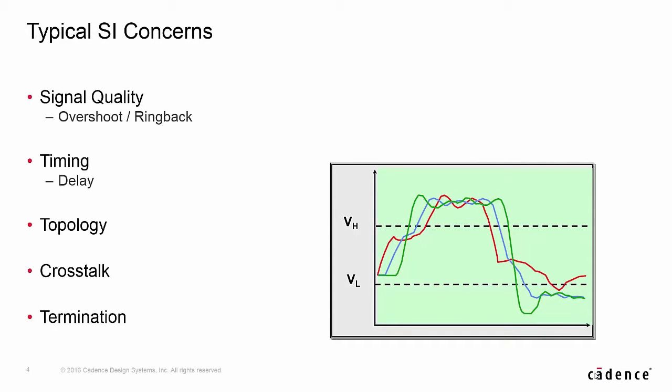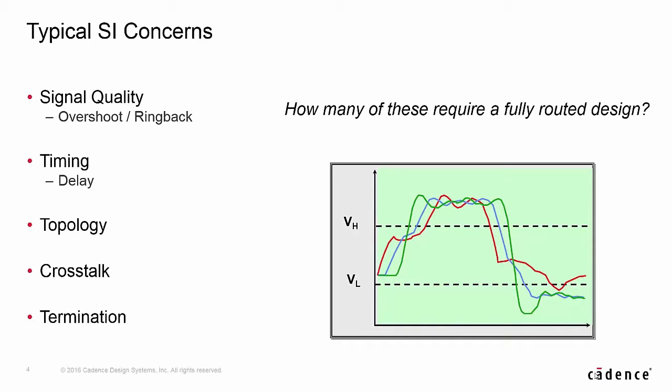We have signal quality with things like overshoot and ringback, timing-related issues like delay, what kind of topology works best for the situation and whether or not termination is needed, and of course crosstalk. Now ask yourself if you need interconnect to investigate all of these. Naturally the one that absolutely requires routed traces in place is crosstalk.